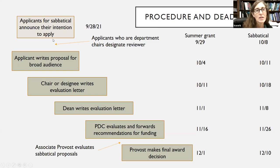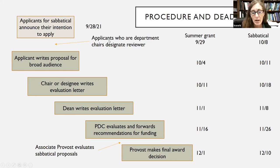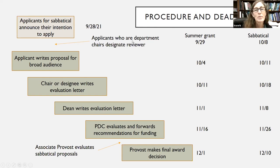This piece here is only for people who are going to be applying for sabbatical — they need to announce their intention to apply by the 28th. I have the procedure and dates here. People who are department chairs, if they are, then they have to designate a reviewer, and those are the dates for when that has to be done. It's coming up pretty quick.